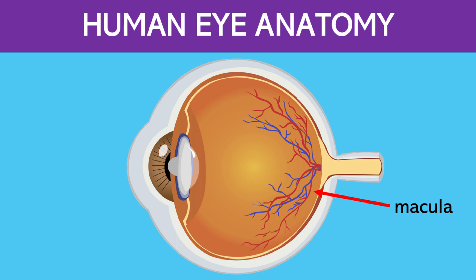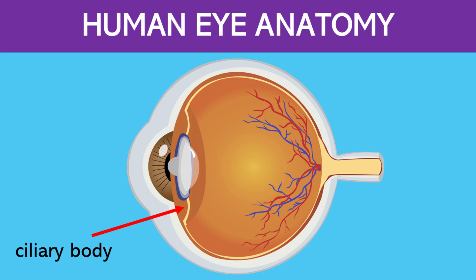This area is called the macula. This is a small central area of the retina that provides the sharpest vision. It contains a high concentration of cones.